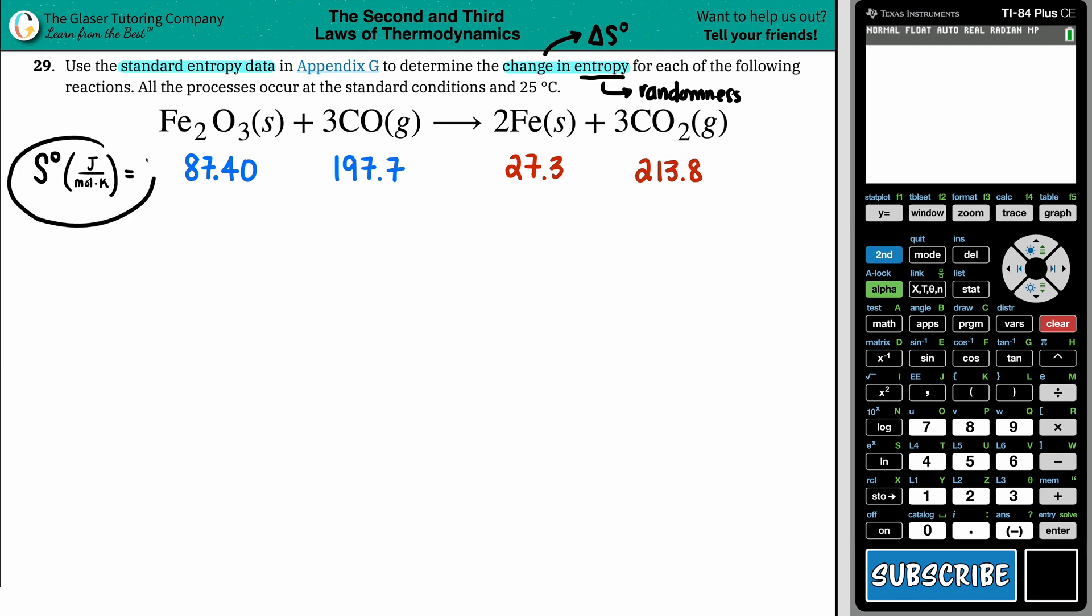So that's what I did. I went to the back of the textbook to find out the entropy values for each individual component. So for Fe2O3, you have 87.40 joules per mole times Kelvin. Carbon monoxide, 197.7. Just iron by itself is 27.3. And for carbon dioxide gas, 213.8 joules per mole times Kelvin.